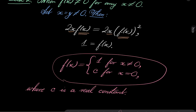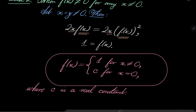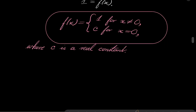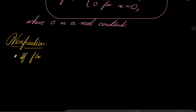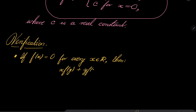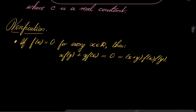We have two families of solutions, but we have to do verification to make sure. Let's start with our first function which is constantly 0. If f(x) = 0 for every real number x, then x·f(y) = 0 and y·f(x) = 0, and this of course equals (x+y)·f(x)·f(y). Nothing special in this case — the first function is verified.